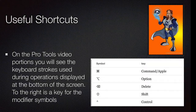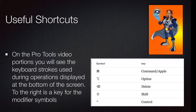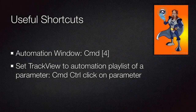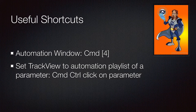You'll see the shortcuts that I'm using at the bottom of the screen. If you're a PC user, you can easily find a conversion from the Mac modifiers to the PC modifiers. Here are some of the useful shortcuts that we'll be using: opening up the automation window, and showing the automation playlists.